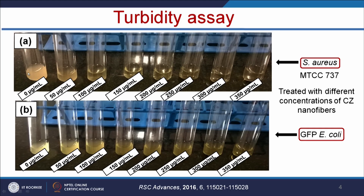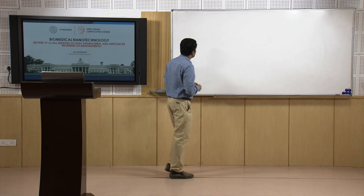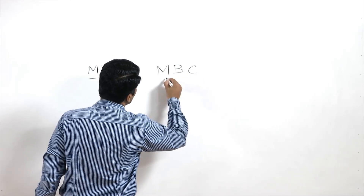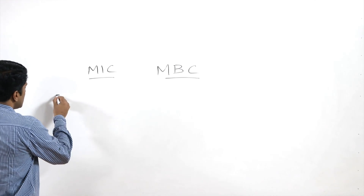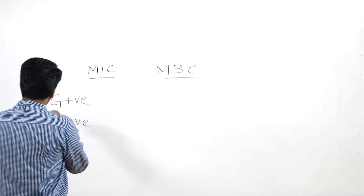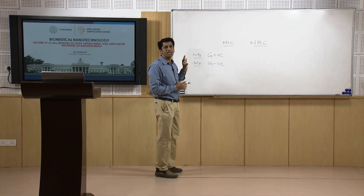In the control, where there is no nanomaterial, the growth of bacteria is visible by turbidity. With respect to increasing concentration, the turbidity goes down. Using this visual turbidity assay, we can easily identify the minimal inhibitory concentration (MIC) as well as the minimal killing concentration or minimal bactericidal concentration (MBC). When nanoparticles are added to gram-positive and gram-negative bacteria, we can identify whether the nanomaterial has broad antibacterial efficiency.